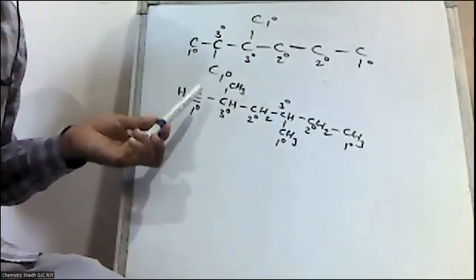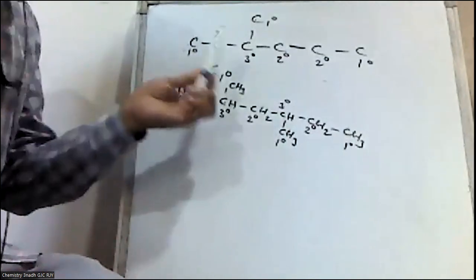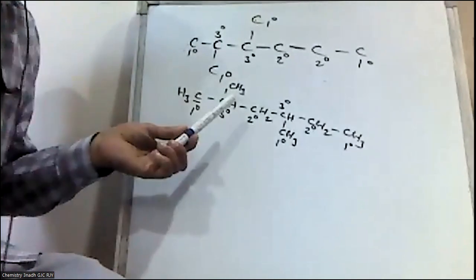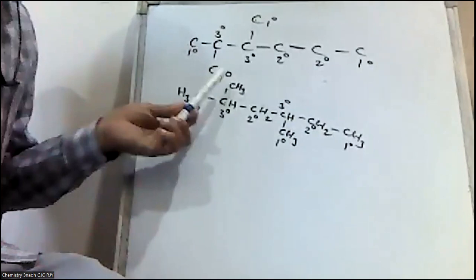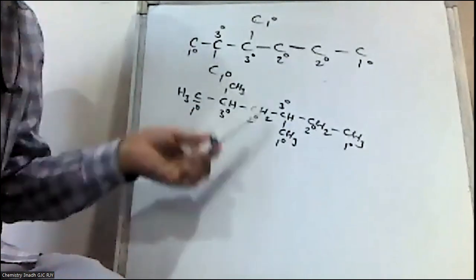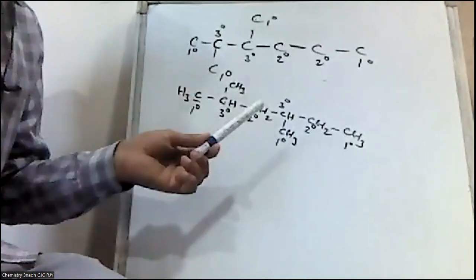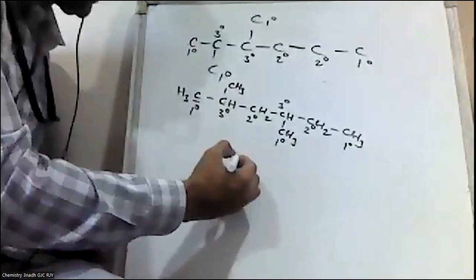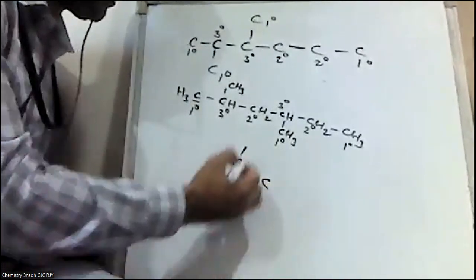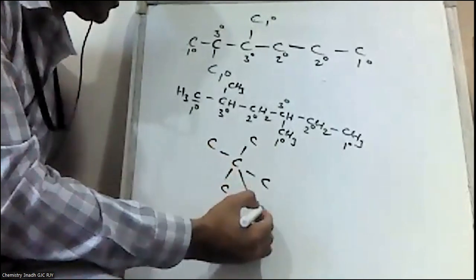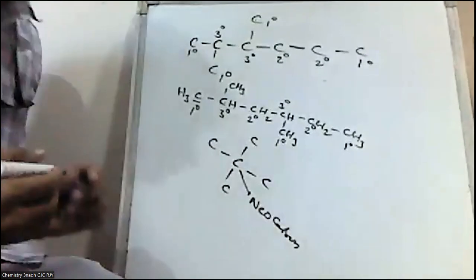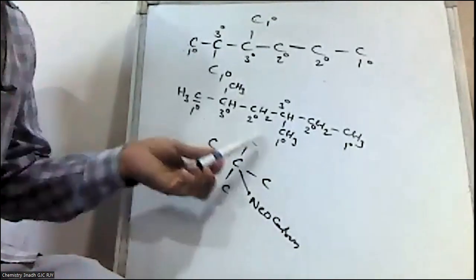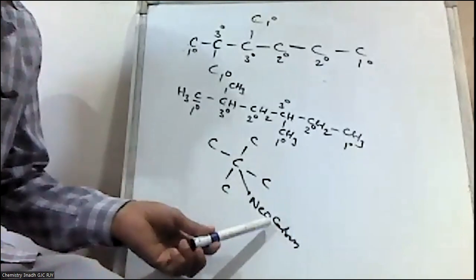Summary: If a carbon is attached to only one carbon, it is called primary carbon, denoted with one degree. If attached to two other carbons, it is called secondary carbon, denoted with two degree. If attached to three other carbons through a single bond, it is called tertiary carbon. And if a carbon is attached to four other carbons, it is called neocarbon.